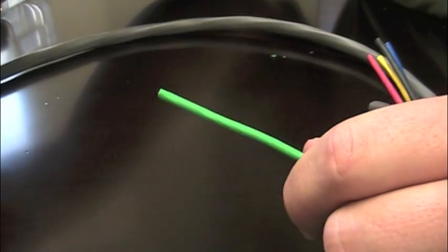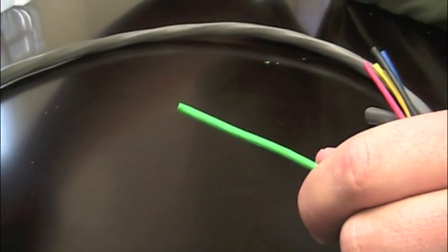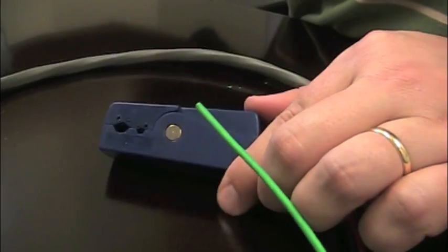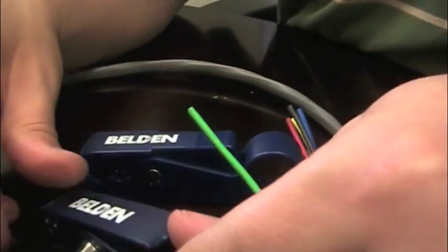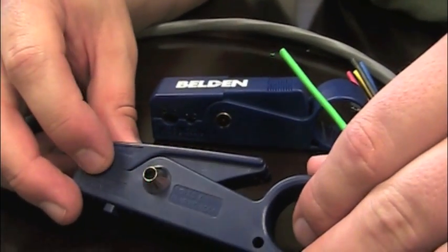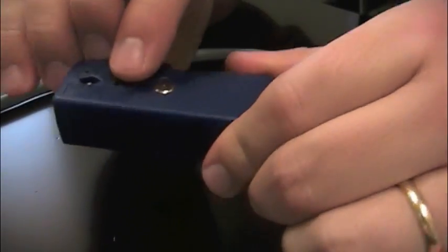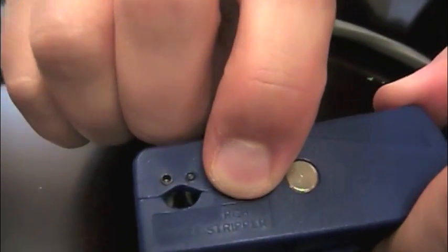Now that we have our perpendicular cut, we're ready to strip our connector. We'll go ahead and use our Belden RGB strip tool, which is different than our standard RG59 and RG6 strip tool. It's different because it has a lighter spring and it also has the words RGB written right on the side there.